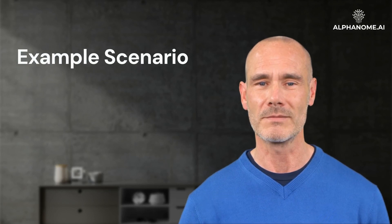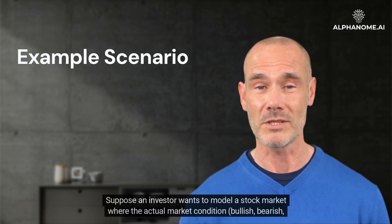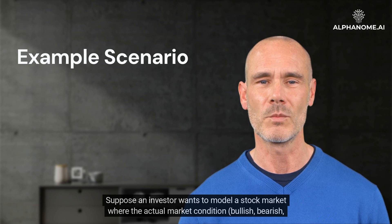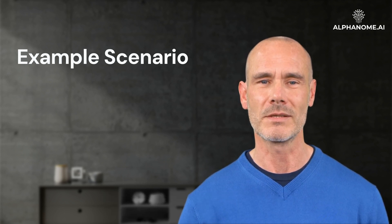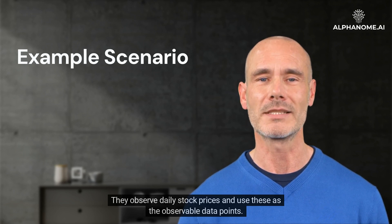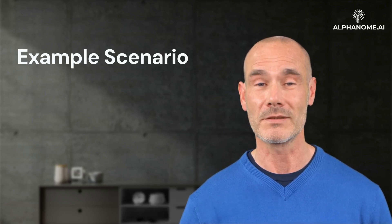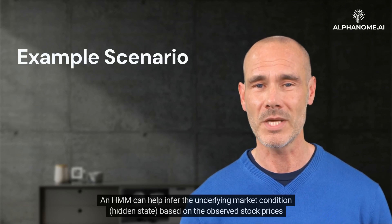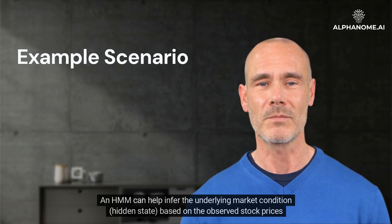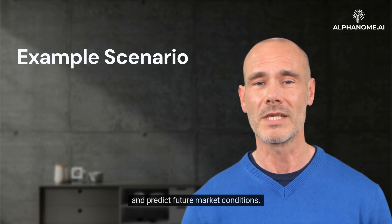Example scenario: Suppose an investor wants to model a stock market where the actual market condition — bullish, bearish, or neutral — is hidden. They observe daily stock prices and use these as the observable data points. An HMM can help infer the underlying market condition, or hidden state, based on the observed stock prices and predict future market conditions.